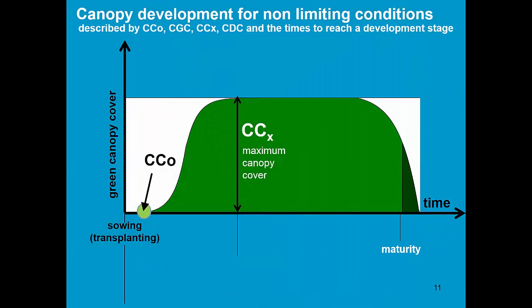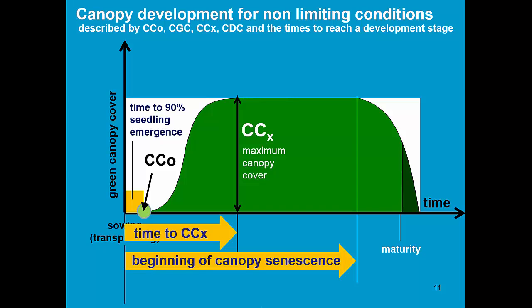In the late-season stage, the canopy will decline, and that is described by a canopy decline coefficient. The canopy development for non-limiting conditions is described by CCNOR, CCX, CGC, and CDC, and the time to reach a development stage: time for seedling emergence, the time to maximum canopy cover, the time to canopy senescence, and the time to physiological maturity. All these are described in the crop file.